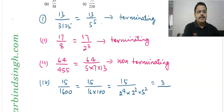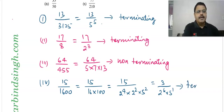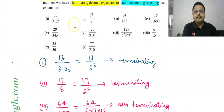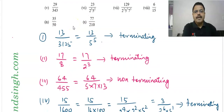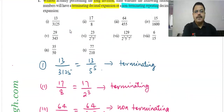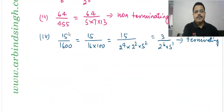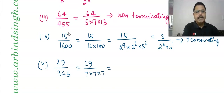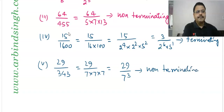After simplification of 15/1600, we get a denominator in the form 2^6 × 5^1, which is of the form 2^m × 5^n, so it is terminating. Question 5: 29/343. Since 343 = 7³, there is no factor of 2 and 5, therefore it is non-terminating.